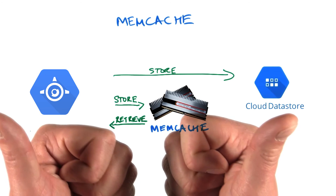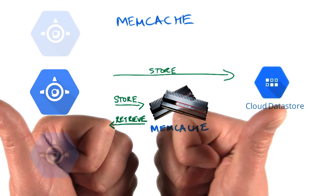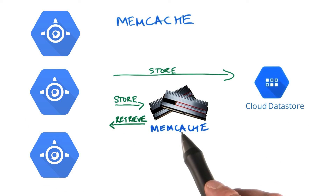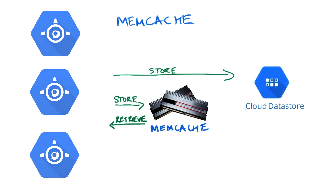This is great, since you don't want your users to wait. Both data store and memcache are shared across any number of instances of your application that App Engine starts. This means that they can all access the same data, provided that your application updates memcache when it updates data store.